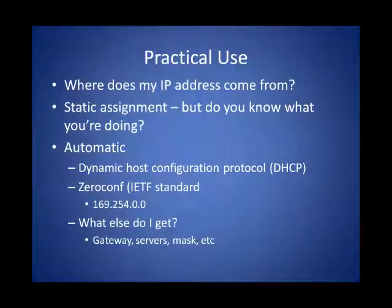Last time we talked a lot about the fields and the addresses used in an IP packet. A reasonable question to ask is: where does my address come from? You can statically or manually assign an address to a node, but you can get into trouble if you don't understand all the required values — for example, if you forget to put in a default gateway or a name server, your packets won't go anywhere. The other way to get an IP address is automatically, either via a DHCP server or with zero-config. If you've ever seen a 169.254 address, that was a zero-config address — it's not good for much other than ad hoc networking.